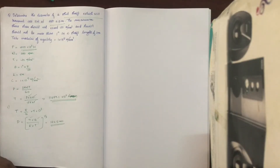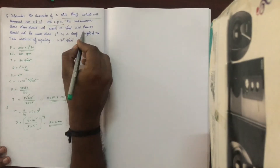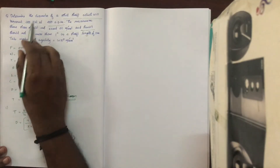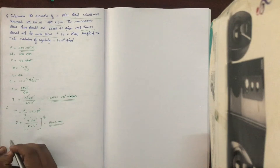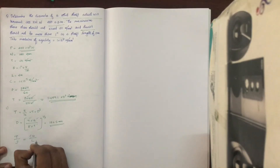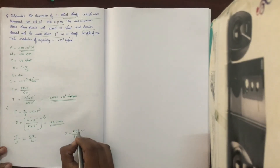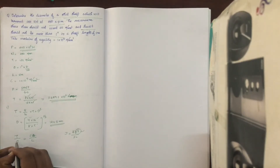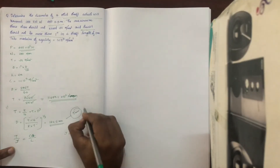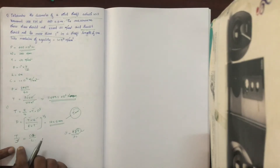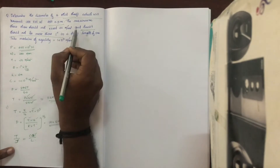Now find the diameter of the shaft such that the maximum shear stress should not exceed the given limit. Using the torsional formula relating torque and shear stress, we can solve for the required diameter.